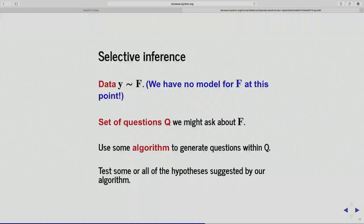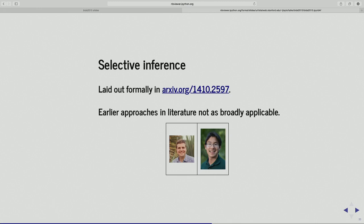So we have the typical task: data with no model, some algorithm to generate questions out of a big collection, and we're going to test some or all of those suggested by the algorithm. There are some papers with a formal description of the mathematical properties of what I'm describing. I put pictures of students I worked with at Stanford — three or four of them are actually around campus here this quarter. Will is in the stats department as an assistant professor now. There's a formal description mathematically of what this is in this paper if you're interested.